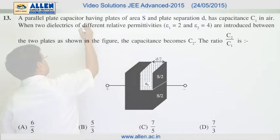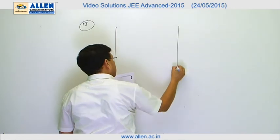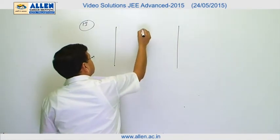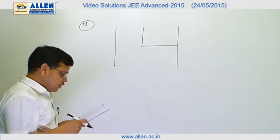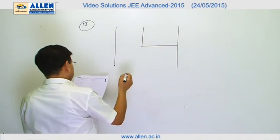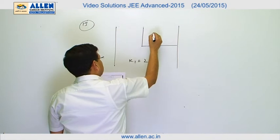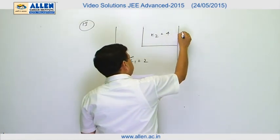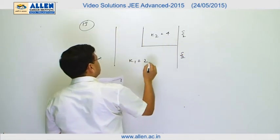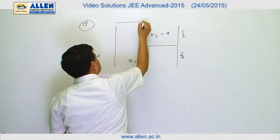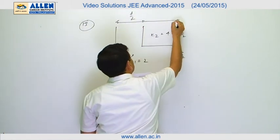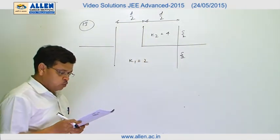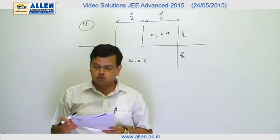Paper 2, question number 13. We have a parallel plate capacitor whose capacitance is C1. Part of the space is filled with a dielectric of constant K1 equal to 2, and the remaining with dielectric constant K2 equal to 4. If the total area is S, we take each part as S/2, with widths d/2 each. After filling the dielectric, the capacitance becomes C2, and we have to find the ratio C2 over C1.